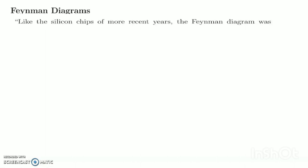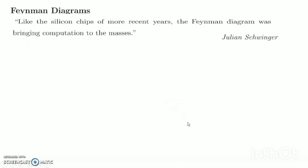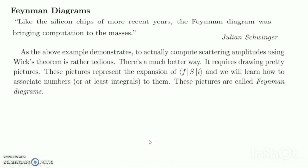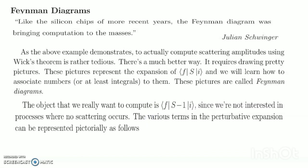Like the silicon chips of more recent years, the Feynman diagram was bringing computation to the masses — this is Julian Schwinger. As the above example demonstrates, to actually compute the scattering amplitude using weak theory is rather tedious. There is a much better way: it requires drawing pretty pictures. These pictures represent the expansion of the eigenstate expectation value ⟨f|S|i⟩. We will learn how to associate numbers to them. These pictures are called Feynman diagrams.